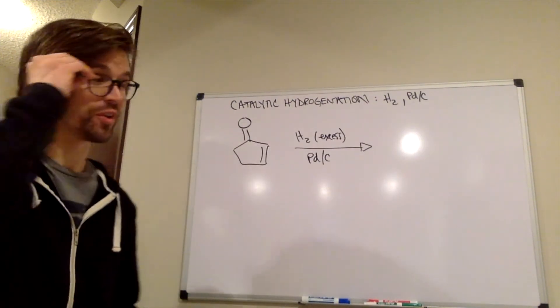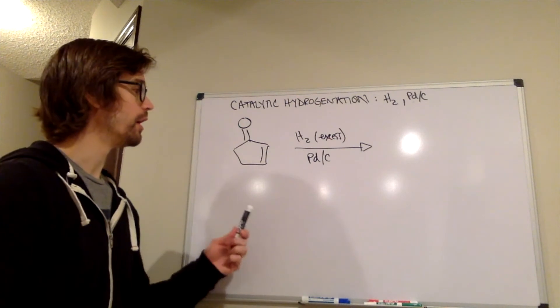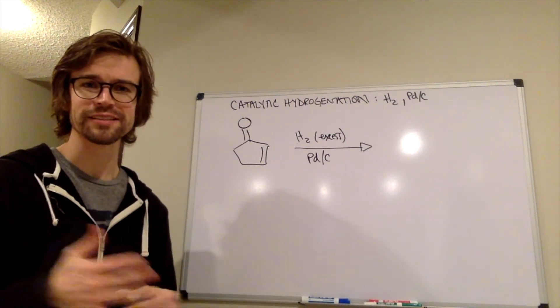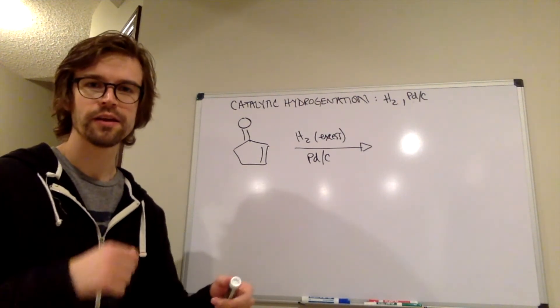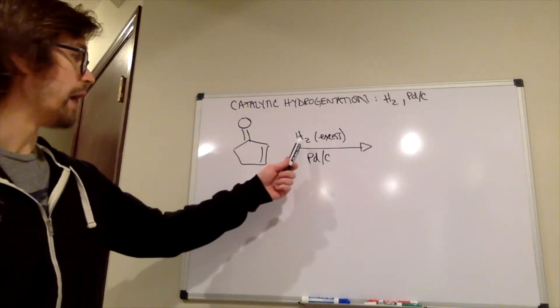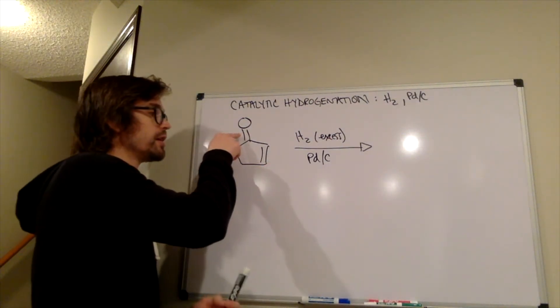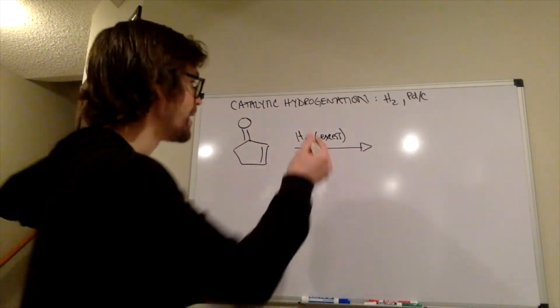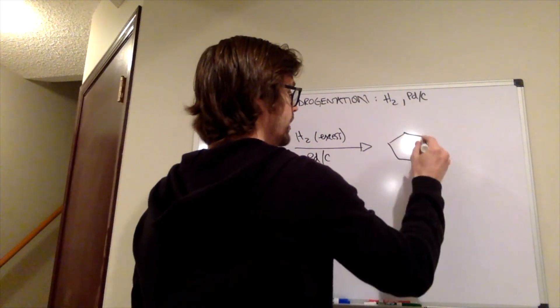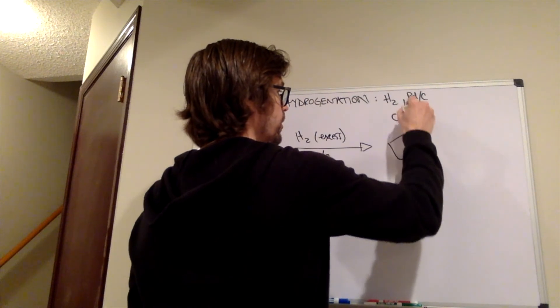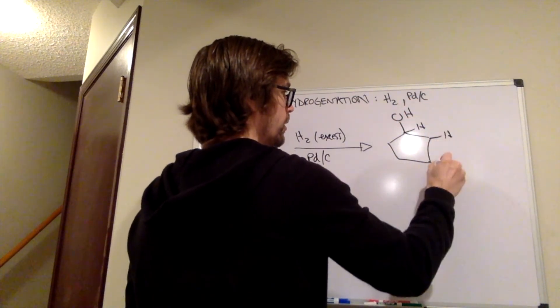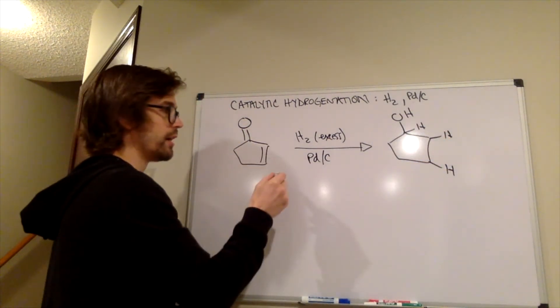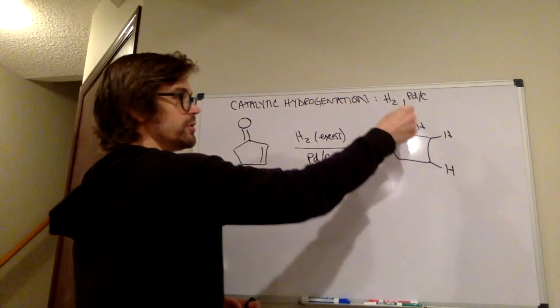All right. So here's our example. We have a ketone, and we're treating with hydrogen and platinum and carbon. So predict the product of that. What's that going to make? We have an excess of this H2. So hydrogen with platinum and carbon can reduce the ketone, but it does that really slowly. What is it going to reduce faster? It's going to reduce that alkene faster. So if we have an excess of this hydrogen with platinum and carbon, it's going to reduce both the alkene. I just put the hydrogens from the H2 that are now attached there and there, and then it's also going to reduce the ketone to the alcohol.